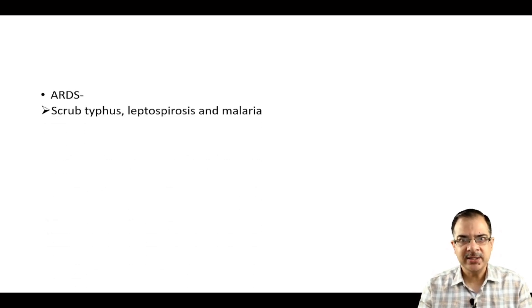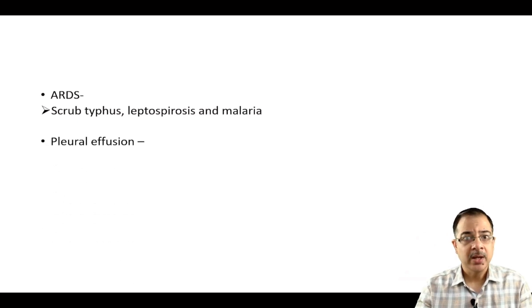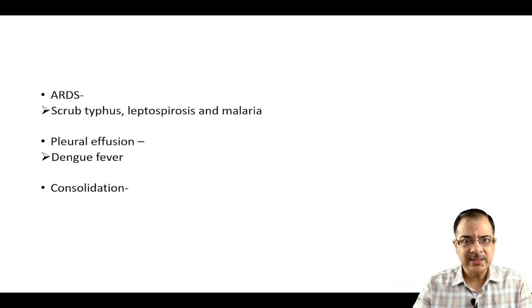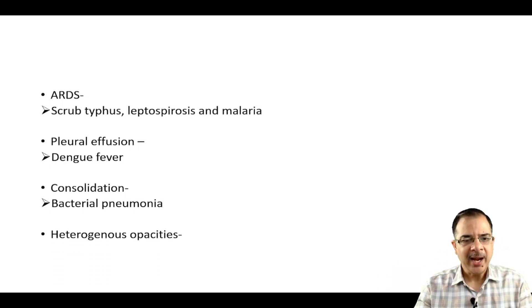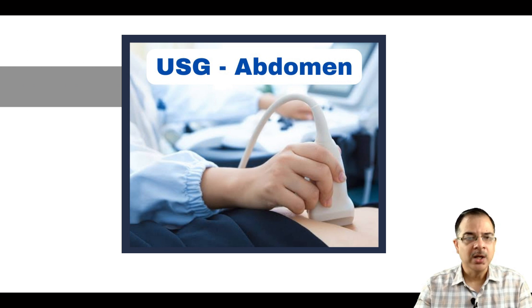On chest X-ray: ARDS will show bilateral opacities in a bat-wing distribution, caused by scrub typhus, malaria, or leptospirosis. Pleural effusion is seen in dengue fever due to plasma leakage, and also in tuberculosis or rheumatic diseases. Consolidation is seen in bacterial pneumonia like pneumococcal pneumonia. Heterogeneous opacity is seen in tuberculosis.